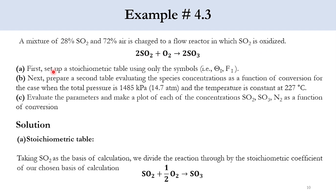We have to do 3 steps. Number 1: set up a stoichiometry table using the symbols theta and F. Next, prepare a second table evaluating species concentration as a function of conversion for the case when total pressure is 14.7 atm or 1485 kilopascal and temperature is constant at 227 degrees centigrade. Finally, evaluate the parameters and plot each concentration as a function of conversion. This is the overall statement of the problem.